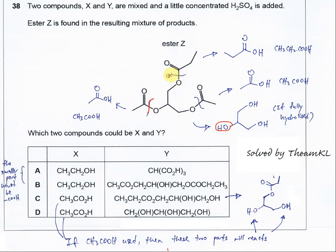This part also undergoes breaking, so this part will form propanoic acid - one carbon, two carbon, three carbon. So here gets OH, forming propanoic acid.